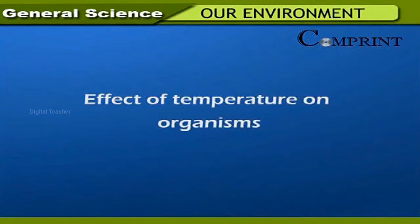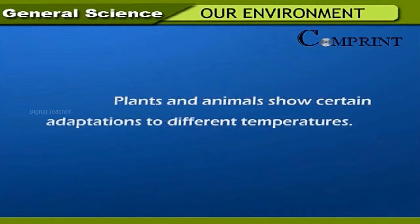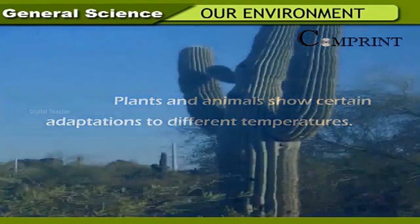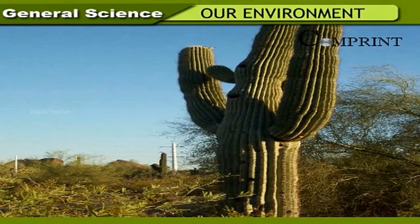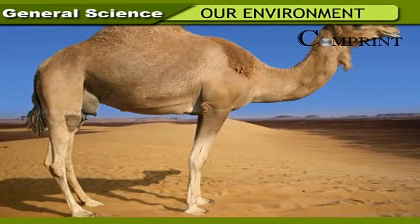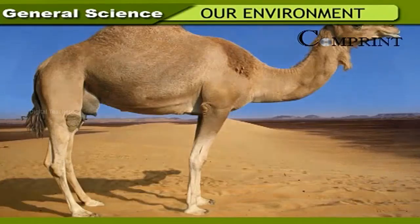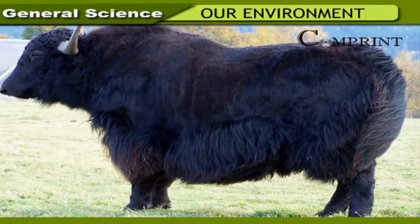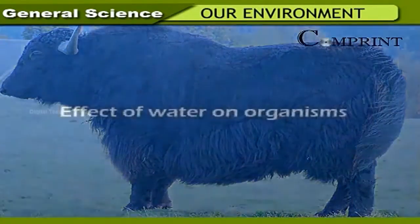Effect of temperature on organisms: Plants and animals show certain adaptations to different temperatures. Desert plants adapt to high temperatures by shedding leaves and storing water in their stem to reduce water loss. At high temperatures, water is sent out through the body as sweat in human beings and animals. Desert animals have less hair. For example, a camel lives for 10 days without water, stores water in its hump. Animals in cold places have thick fur and a thick layer of fat under the skin to prevent heat loss, e.g., the yak.